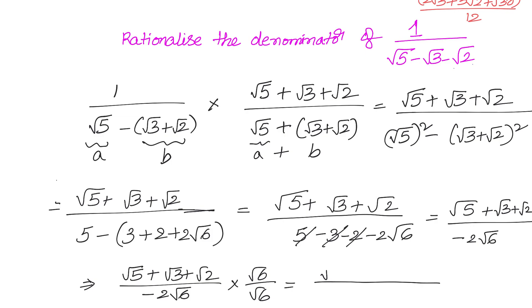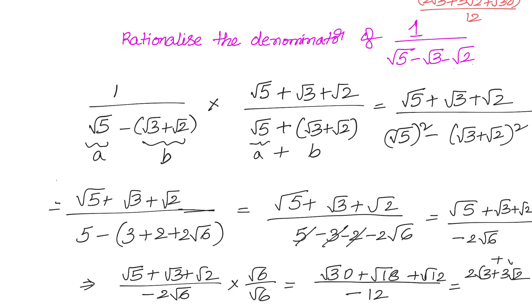The numerator becomes √30 + √18 + √12, divided by −12. Simplifying: √12 = 2√3 and √18 = 3√2, giving (2√3 + 3√2 + √30) divided by −12. That is the same answer as before.